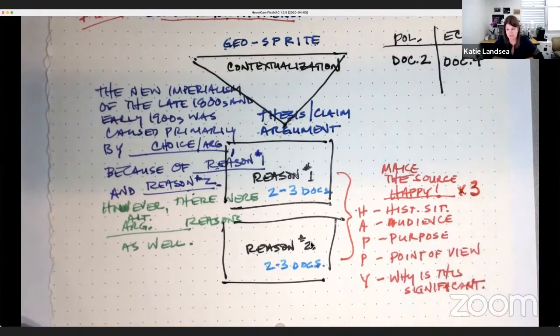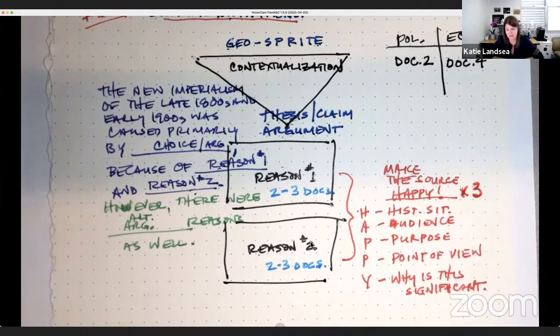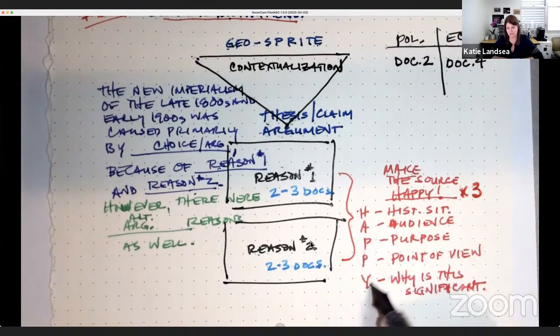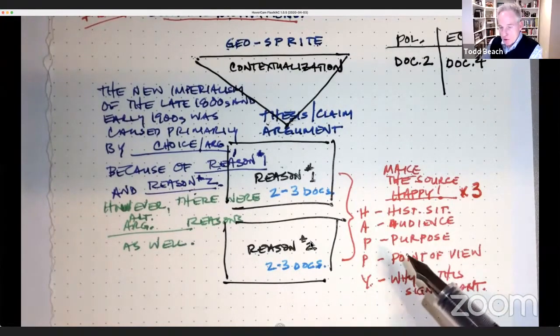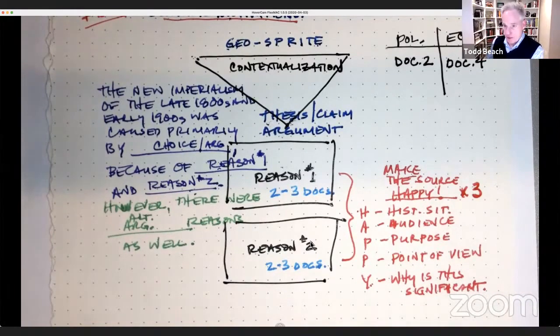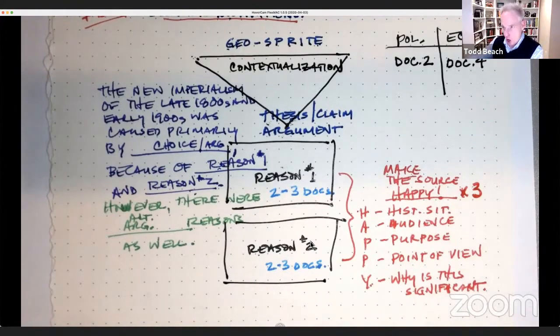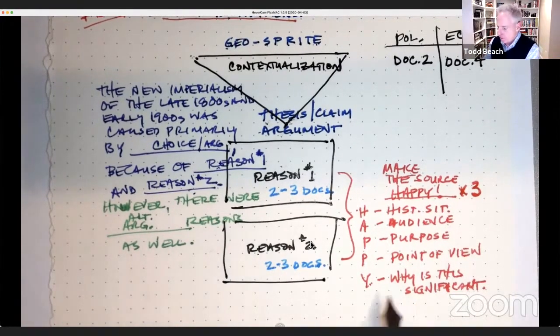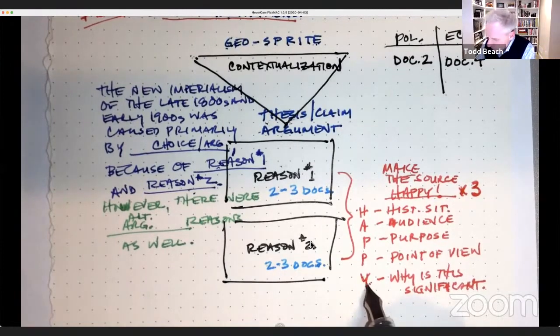So make the source happy. H is historical situation. A is audience. P is purpose. And the other P is point of view. And the Y is why is this significant or important. You do not have to use all four to get the sourcing point. And Katie, if you don't mind me just reminding, the why does not stand alone. The why belongs with all of the other letters. So if you do the historical situation, you include the why. If you do the audience, you include the why. Absolutely. You can think about the T structure. Topic sentence, evidence, telling here's what the evidence is, and then the analysis. This historical situation is significant because, right? That gets you into it.